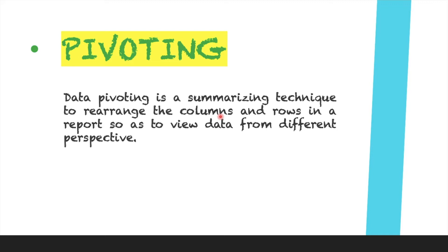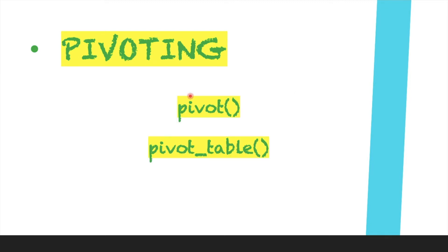Hello everyone, welcome back to the series on pandas. In this video we will specifically discuss pivoting from a Python perspective. We already know that data pivoting is a summarizing technique to rearrange the columns and rows in a report so as to view data from a different perspective. Pivoting basically means rearranging rows and columns to get summarized data from a massive chunk of data.